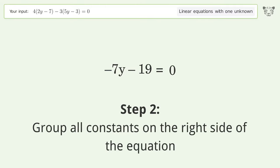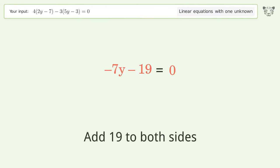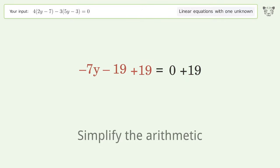Group all constants on the right side of the equation. Add 19 to both sides. Simplify the arithmetic.